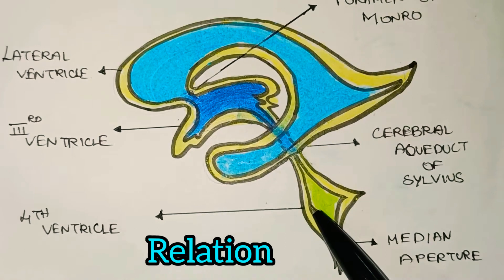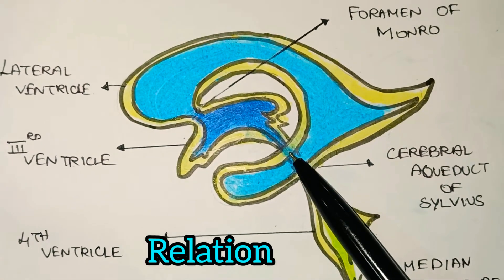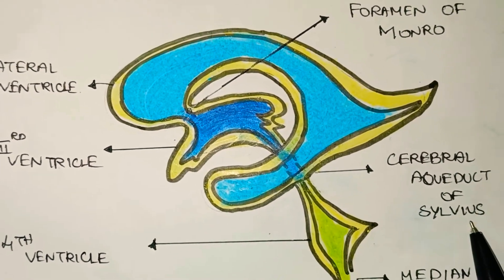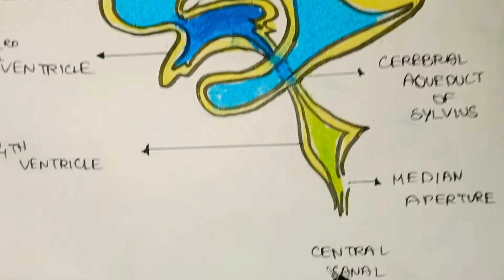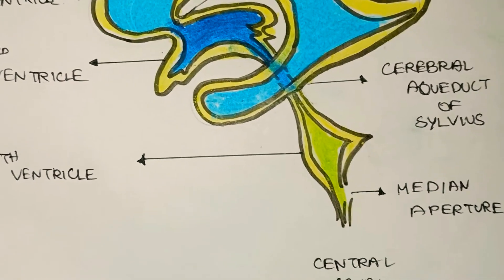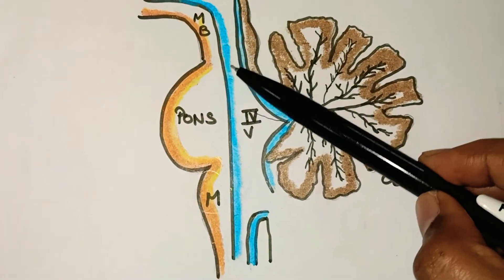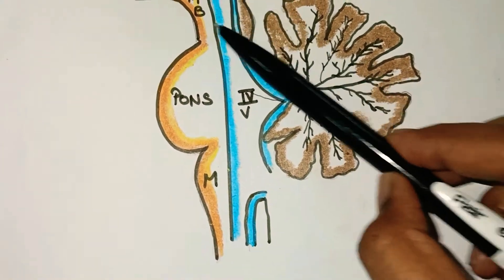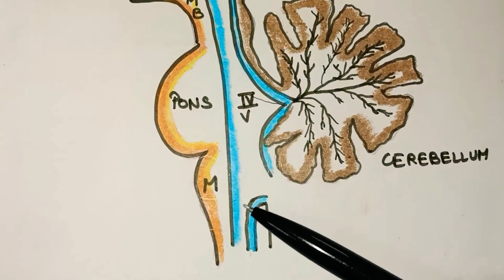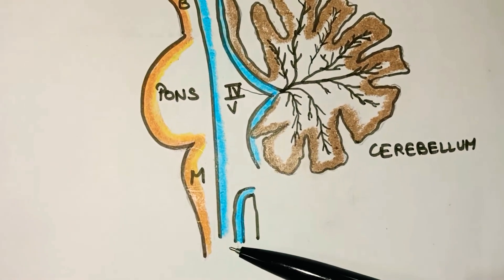The 4th ventricle is related to other parts of the ventricular system. Superiorly, it is related to the 3rd ventricle via the cerebral aqueduct of Sylvius of the midbrain. Inferiorly, it is connected with the central canal of the medulla. The lower part continues as the central canal of the medulla.